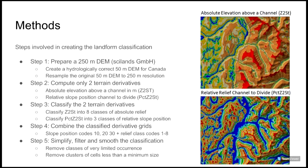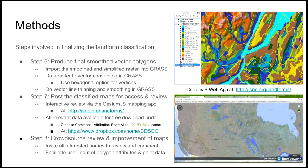Step 3: classify the two terrain derivatives into eight classes of relief and three classes of landform position based on %Z to stream. Step 4: combine the classified grids to produce 24 unique combinations of absolute and relative relief. And Step 5: simplify, filter and smooth this initial raster classification.